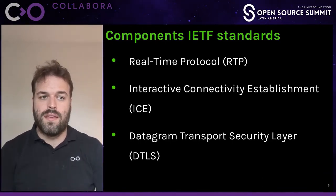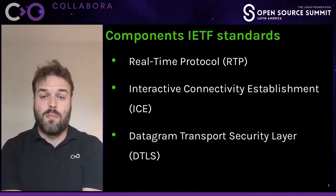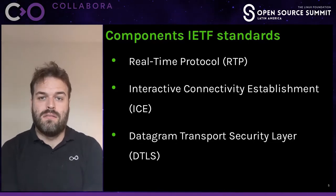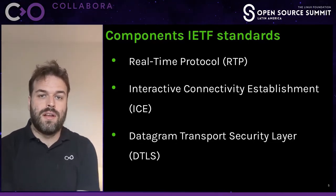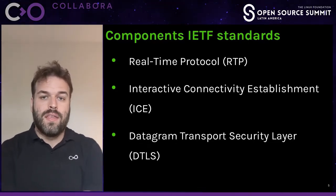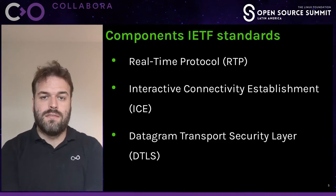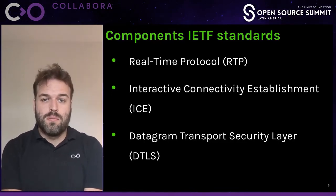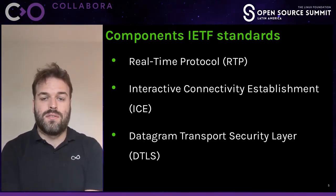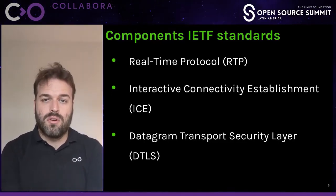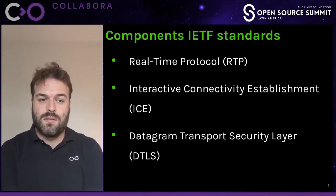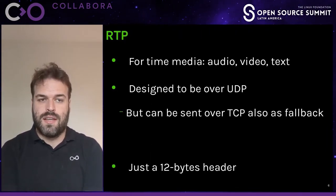So what are the component protocols at the IETF level, the lower layer? There are dozens of RFCs involved, but the most important things you have to know about are: first, the Real-time Transport Protocol (RTP); the Interactive Connectivity Establishment protocol, ICE; and the security layer, which is DTLS.